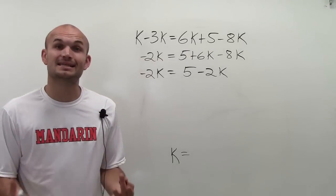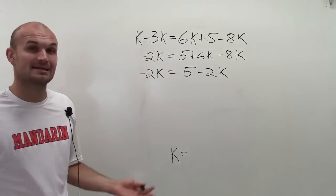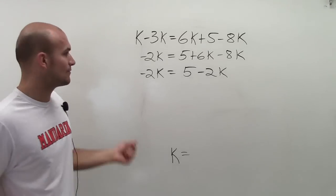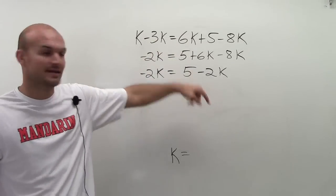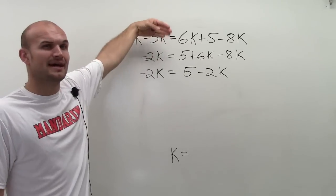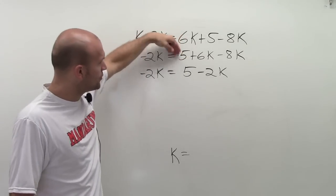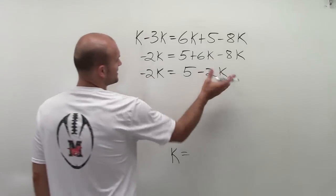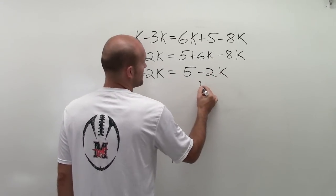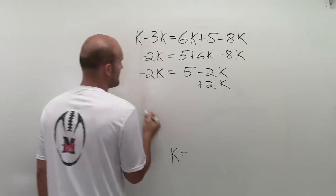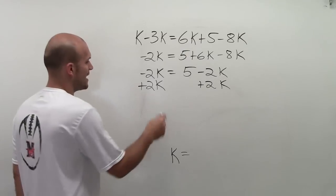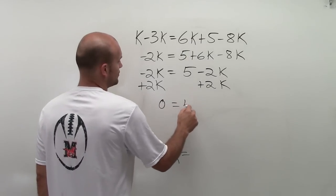I still don't have my k by itself. I'm going to have to get the k's onto one side. I have k on the left and right side. If I get rid of 2k on the left, I'll just be left with 0, but our purpose is to isolate k. So I'm going to get rid of the one on the right side. It doesn't really matter which side you get rid of, but I'm choosing the right side.